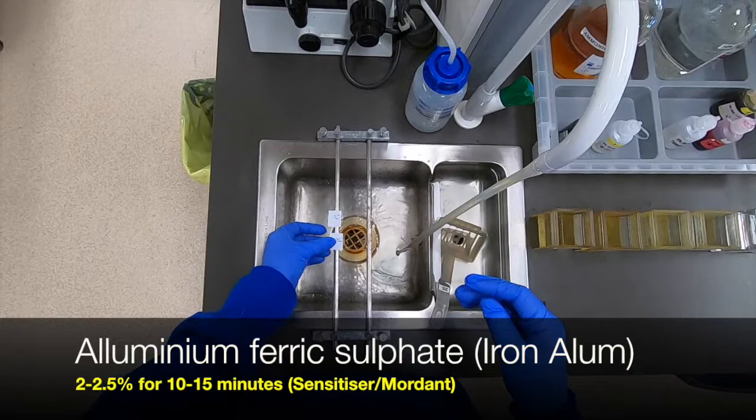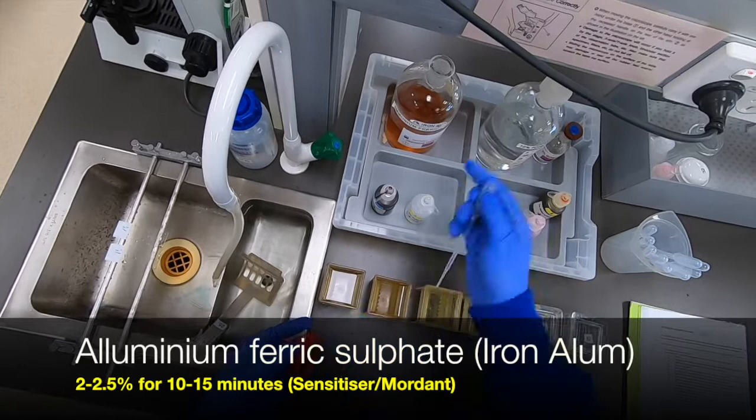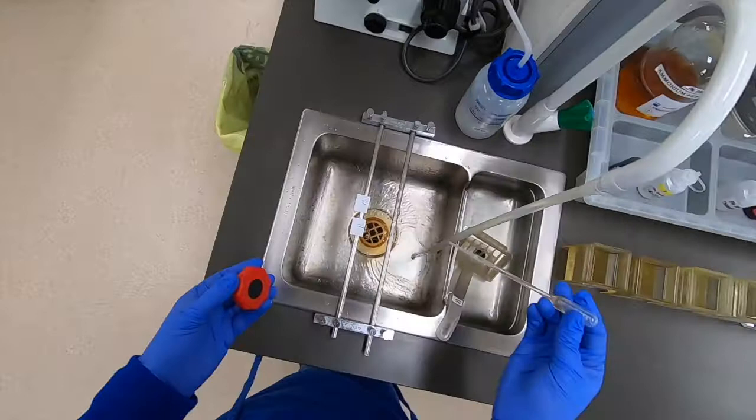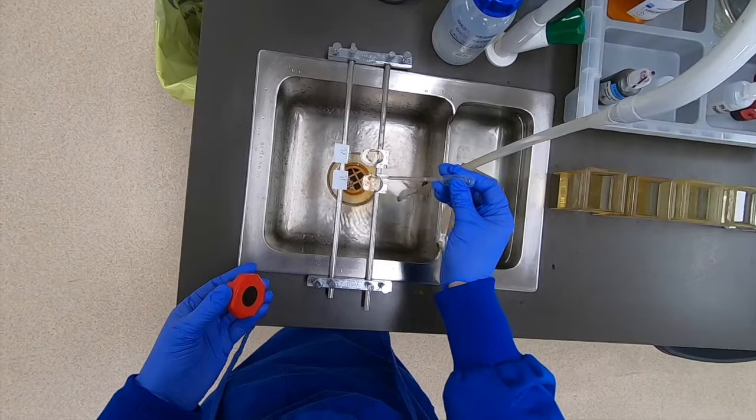And then we treat with aluminium ferric sulphate, otherwise referred to as iron alum. Now depending upon which textbook or expert that you listen to, this is either behaving as a mordant to help the silver bind to the tissue, or as other people refer to it as a sensitizer.